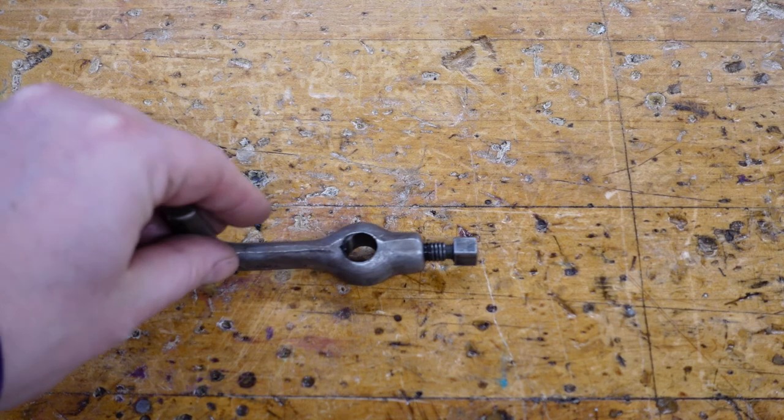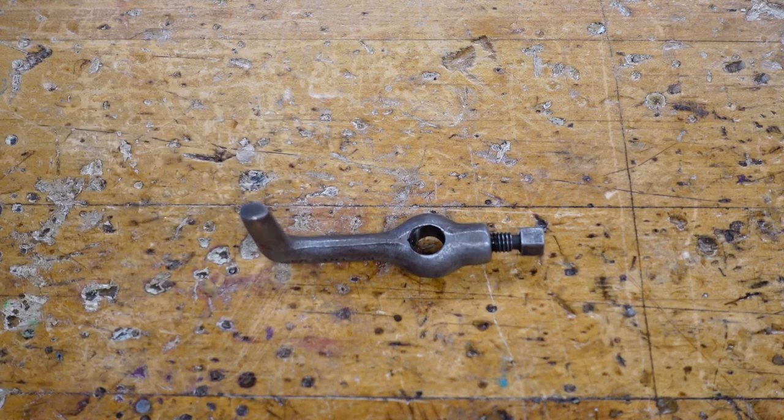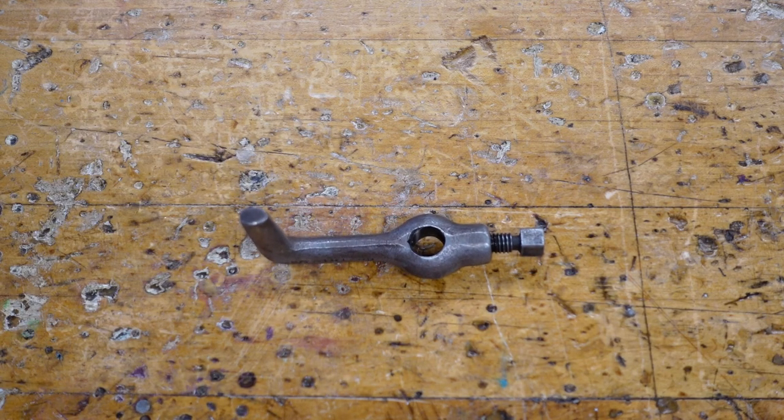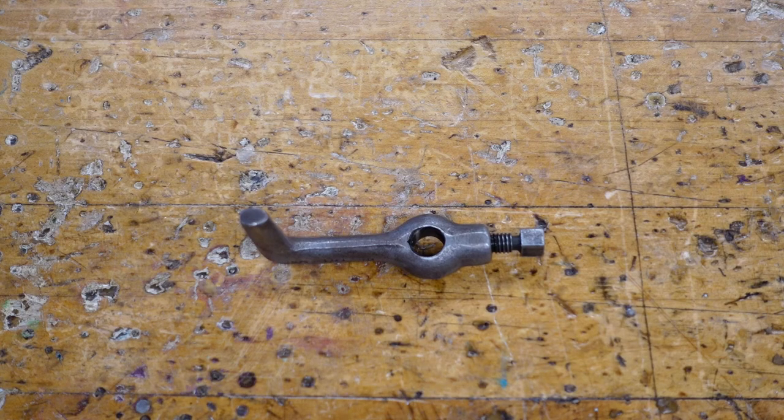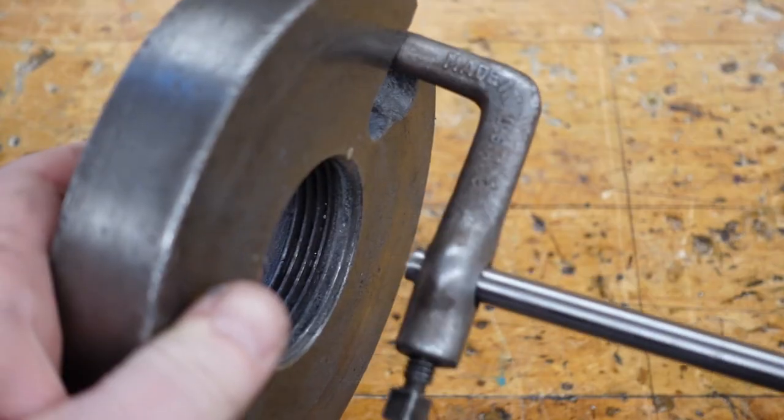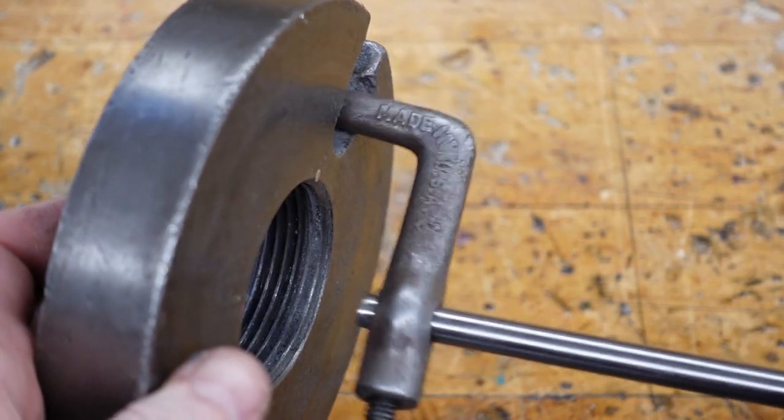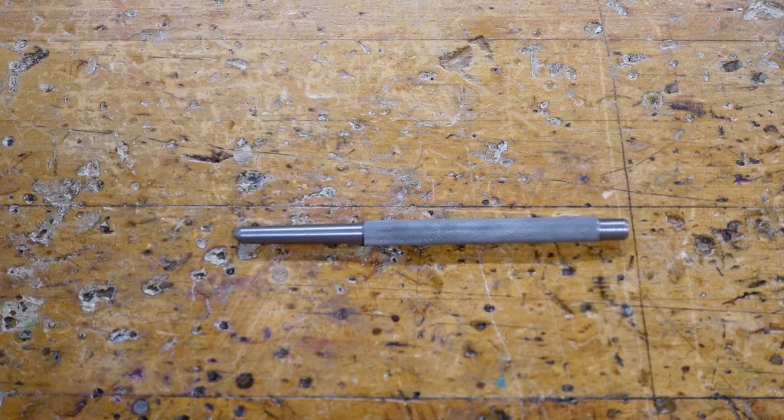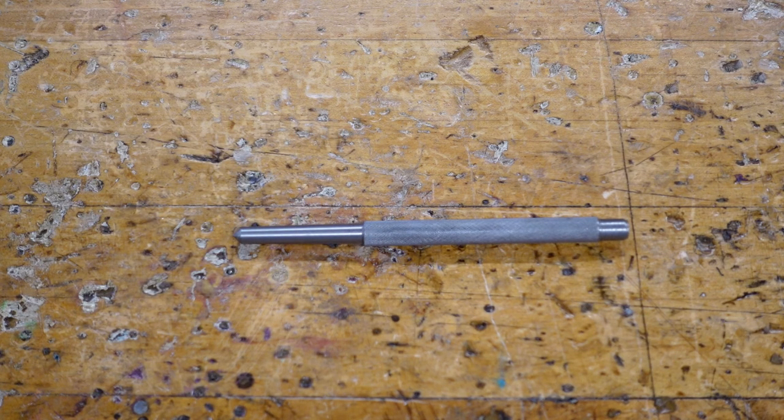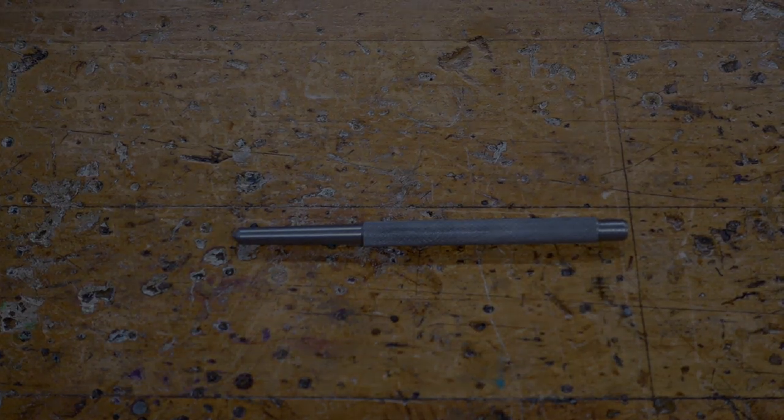Most students forget the final part: the lathe dog. This is actually what's transmitting the power from the lathe to the project and lets us machine our project. You can see how it works here. Again, note the flat end faces out. And those are the lathe tools we're going to use to make our center punch. Next video we'll cut our stock down to length. See you in the next video kids, bye.